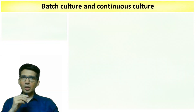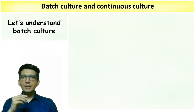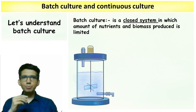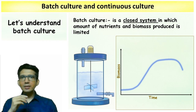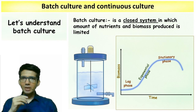Let's talk about batch culture and continuous culture. Batch culture is a closed system where the amount of nutrients and biomass produced is limited. The growth of an organism shows a typical hyperbolic curve with a distinct lag phase, exponential phase, stationary phase, and phase of decline.